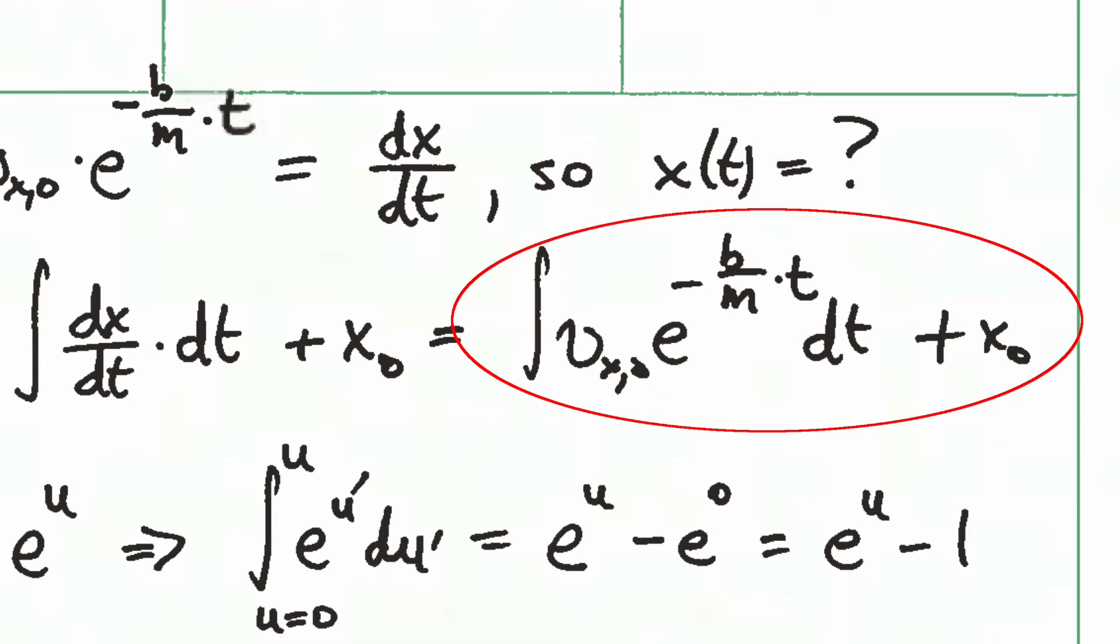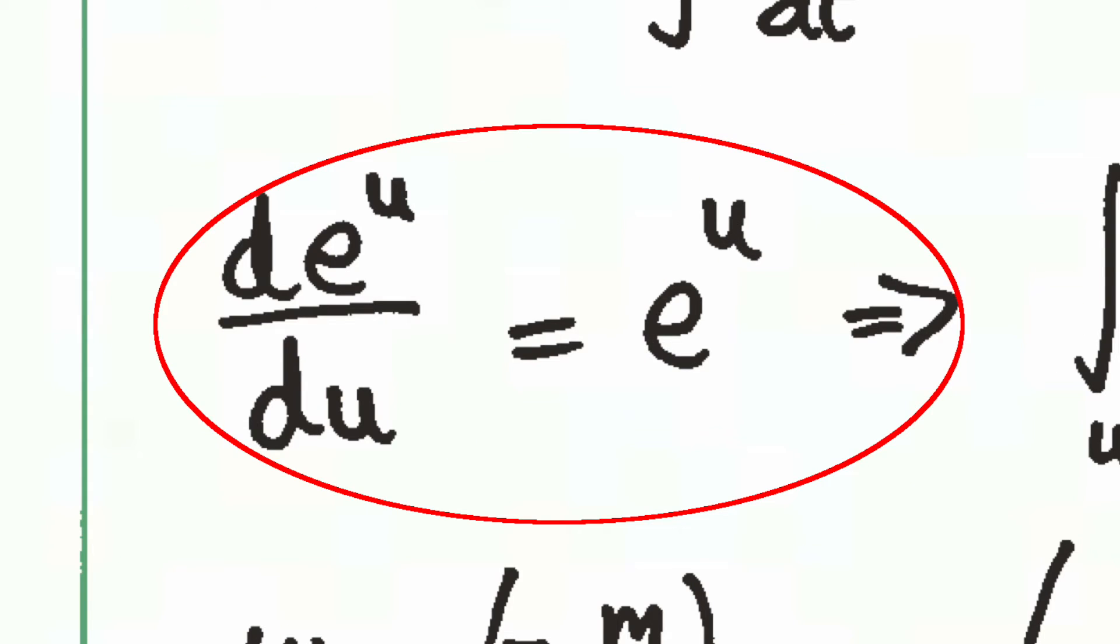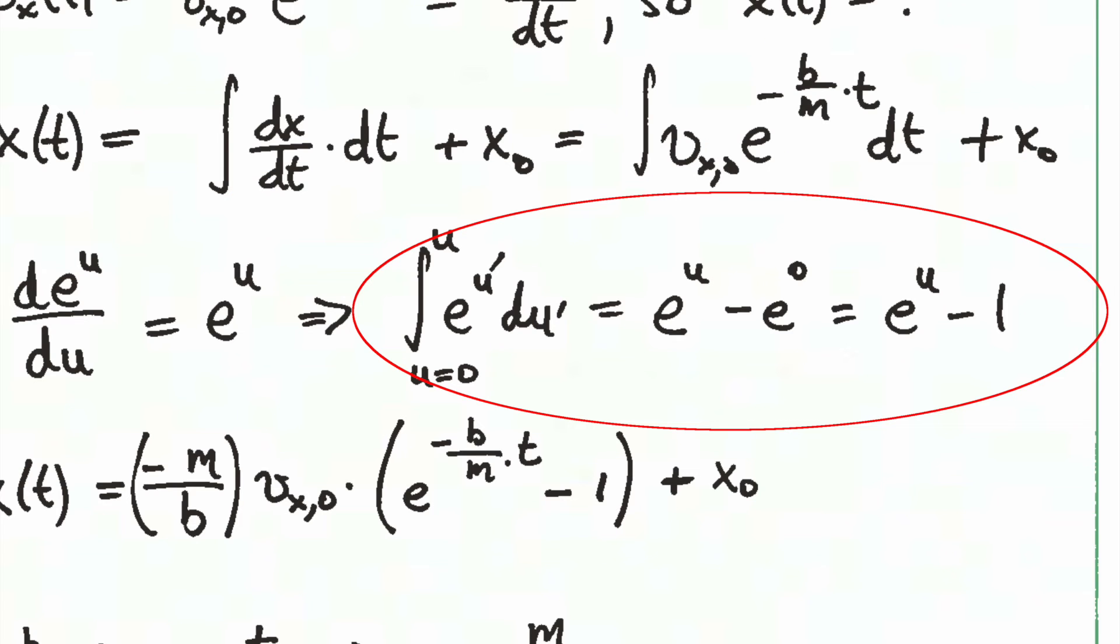And then we can plug in the velocity into the integral there. You can see a circle, the new integrand, plus the initial condition. You may recall that the derivative of the exponential function is just equal to the exponential function itself. And so its integral is particularly simple, as shown here in the red circle.